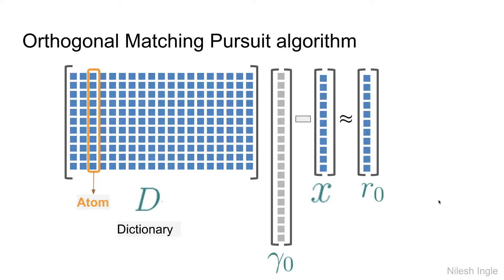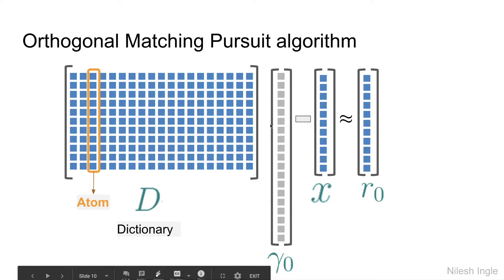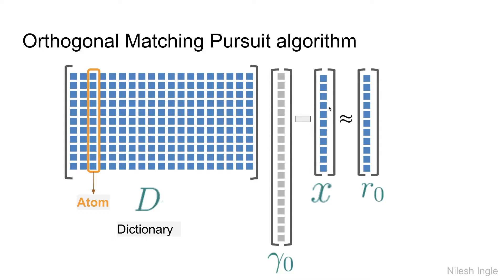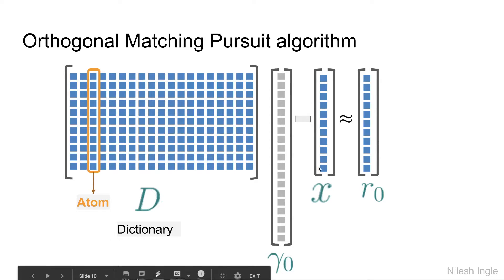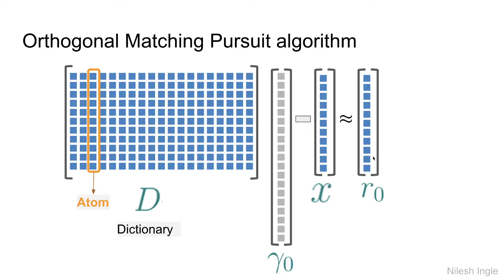The visual intuition for Orthogonal Matching Pursuit is: we have a dictionary D with measurements (blue dots), a signal x (also blue dots), and the residual r — the difference between them. Each column in the dictionary is called an atom. We initialize γ₀ to zero and set the residual r equal to x.